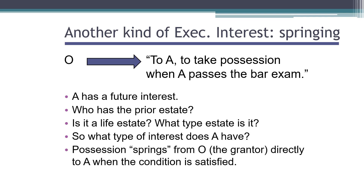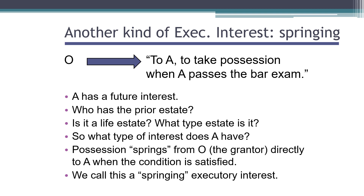You'll notice that possession goes directly from O, the grantor, to A when the condition is satisfied — it doesn't go to anybody else first. And so we say it springs out of the grantor and directly to the holder of the executory interest. Therefore, we call this a springing executory interest.